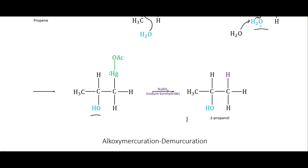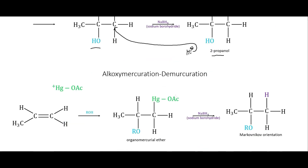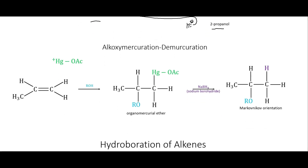We end up with our alcohol group on the product, then sodium borohydride comes in, bringing a hydride ion that attacks that carbon and pushes the mercury off. We form 2-propanol, again in the Markovnikov orientation. So oxymercuration-demercuration gives the Markovnikov product.